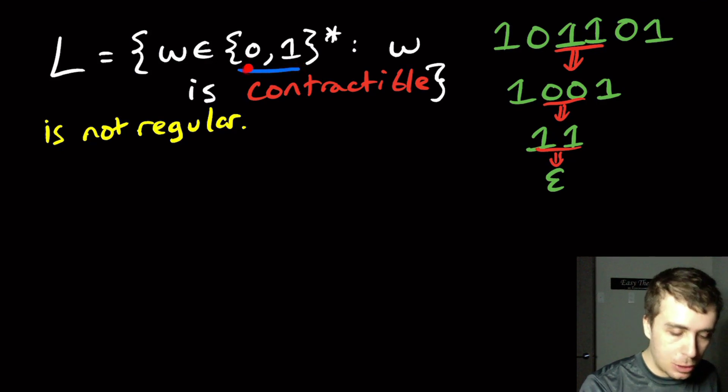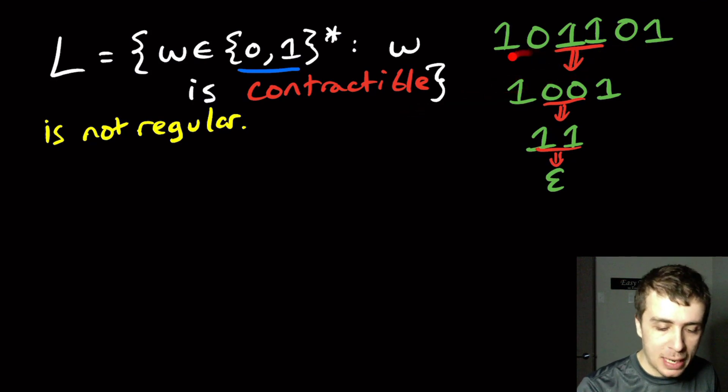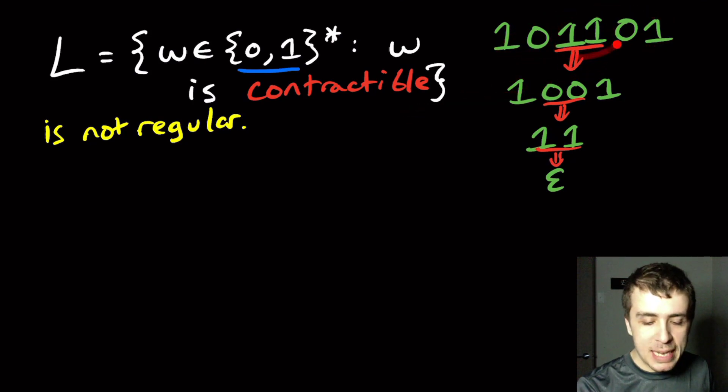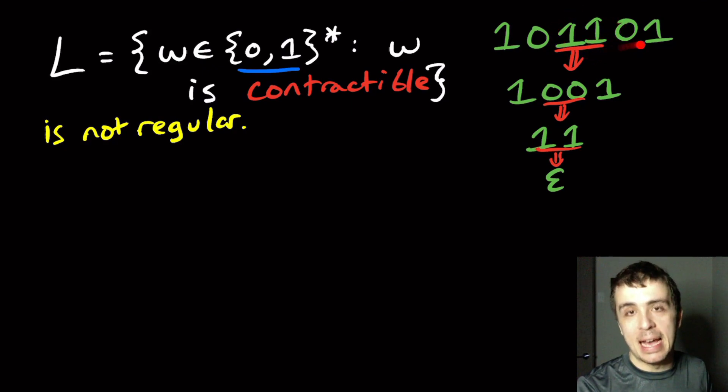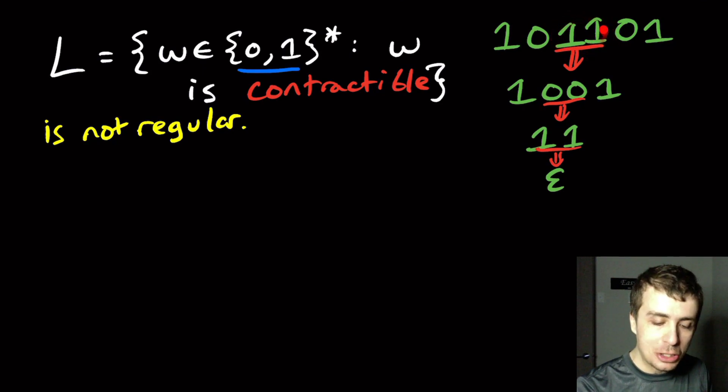What is a contractible string? It's a string where we take a maximal substring—so I can't add anything after it—where all the characters are the same of length at least two, and then repeatedly remove them, and I'm able to get the empty string.